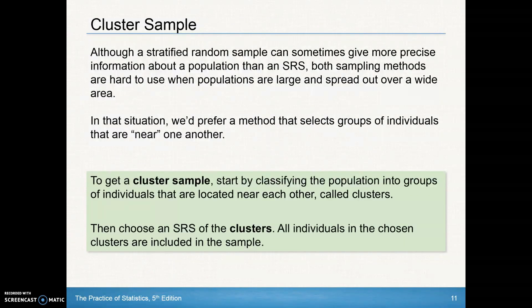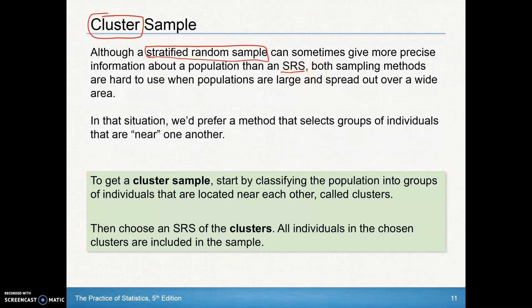We also have a cluster sample. A stratified random sample can sometimes give more precise information about a population than a simple random sample, because with stratified sampling we've guaranteed representation from each of the different groups. In a simple random sample, some groups may be randomly left out. However, both sampling methods are hard to use when populations are large and spread out over a wide area — they're time consuming and expensive.